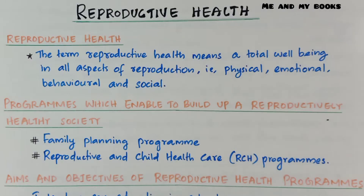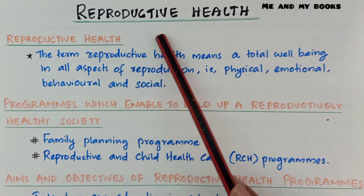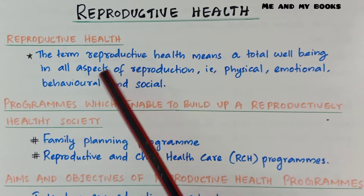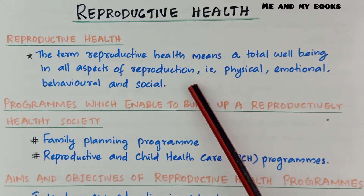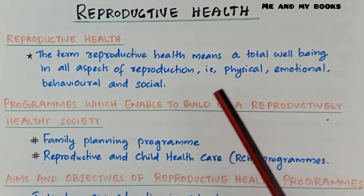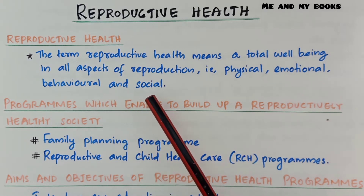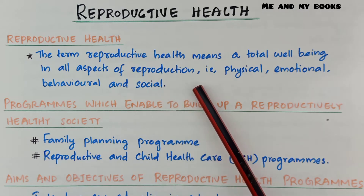So what is that broader meaning? According to the World Health Organization, reproductive health means a total well-being in all aspects of reproduction — that is, physical, emotional, behavioral, and social.